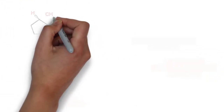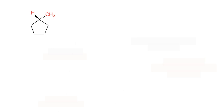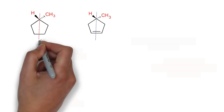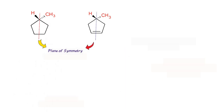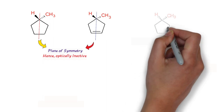Talking about some cyclic systems, we have two compounds that both contain a plane of symmetry. Because of the presence of this plane of symmetry they are optically inactive. Another way to remember it: if one side of the ring's electron density is similar to the other side, the carbon is not attached to four different electron densities, so there is no chiral center and they are optically inactive.